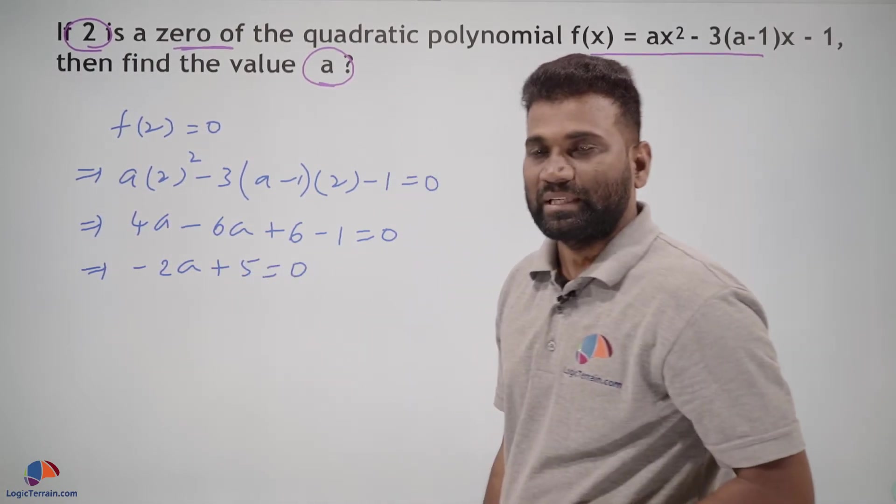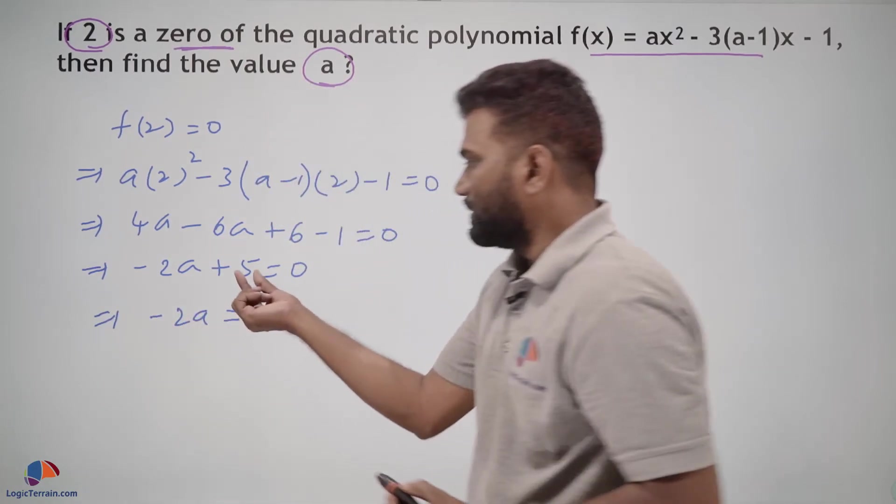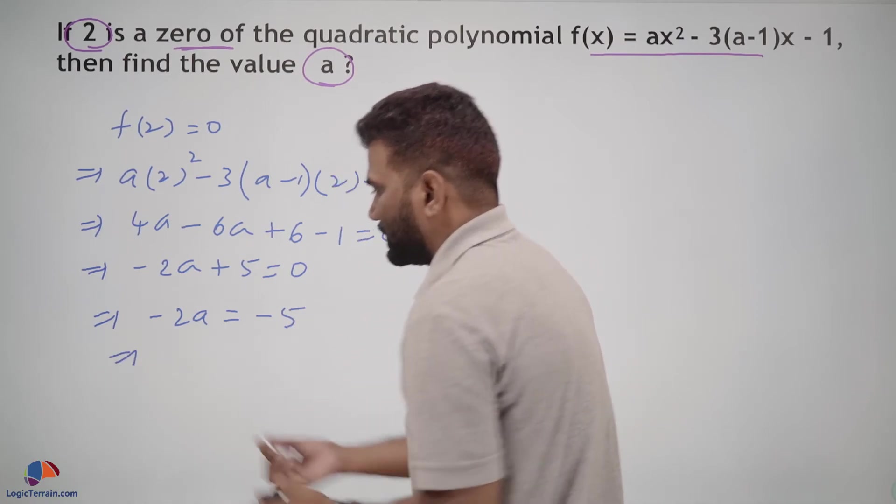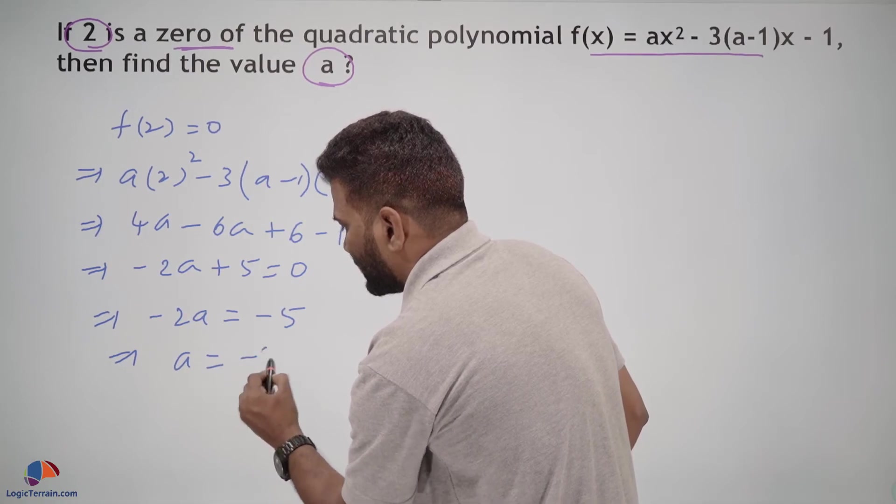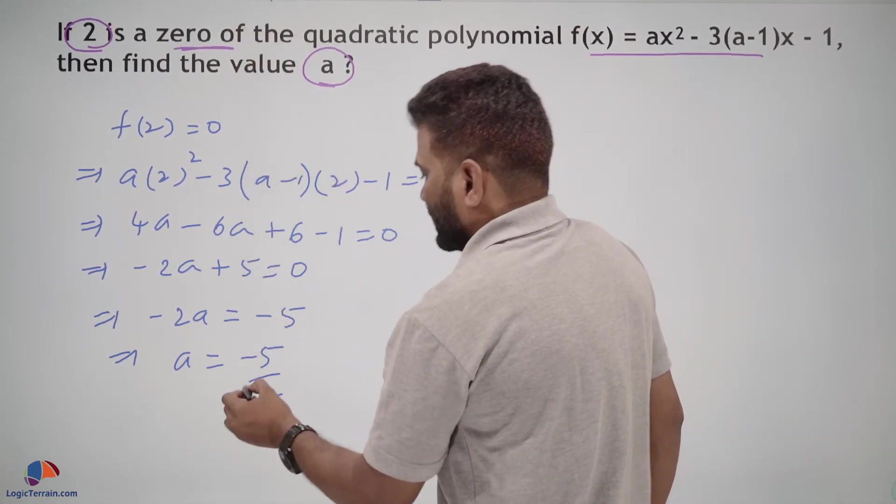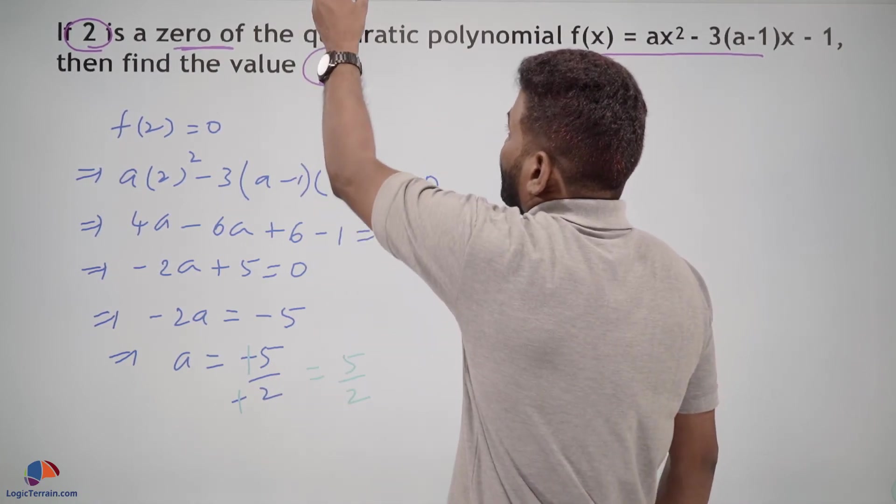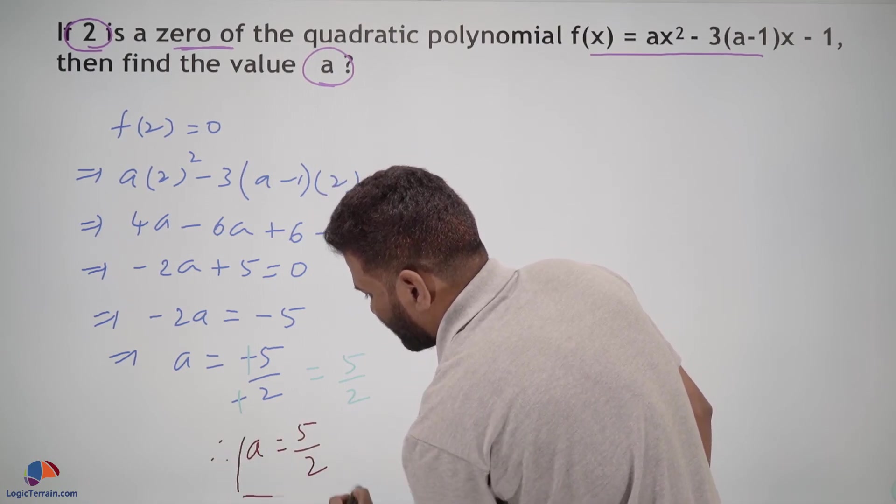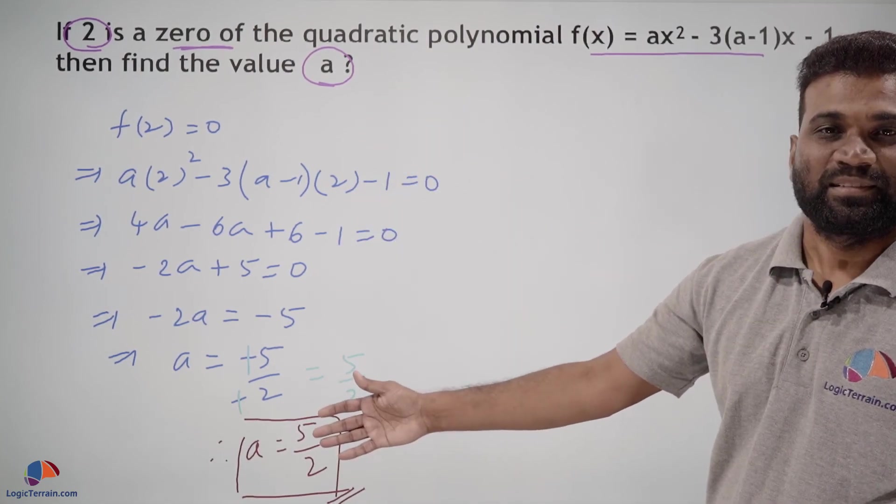Further, -2a equals, if plus 5 comes here, -5. Further, -2a is multiplied by a, then a equals -5 upon -2. Here negative negative gets cancelled, then we have 5 upon 2. Therefore a equals 5/2. This is it.